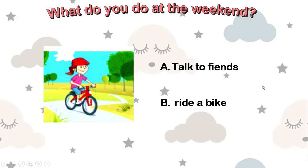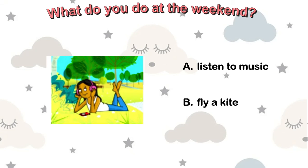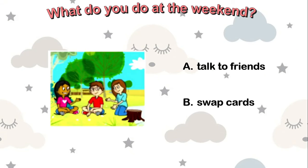A: talk to friends. B: ride a bike. Yes — letter B, ride a bike. What do you do at the weekend? Listen to music or fly a kite? Listen to music. Correct. Look and say — what do you do at the weekend? Talk to friends or swap cards? Talk to friends. Correct.